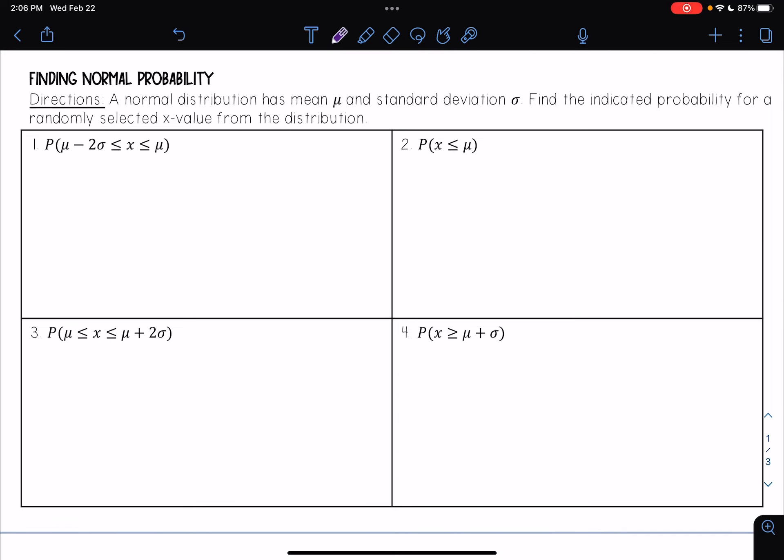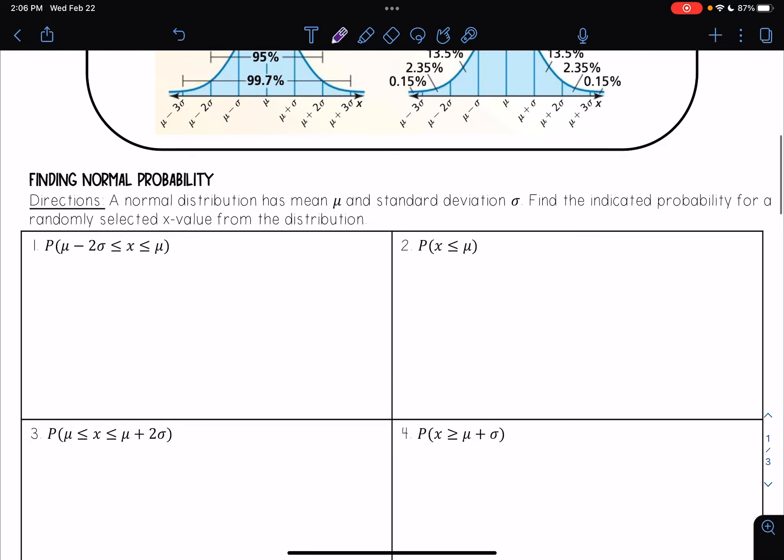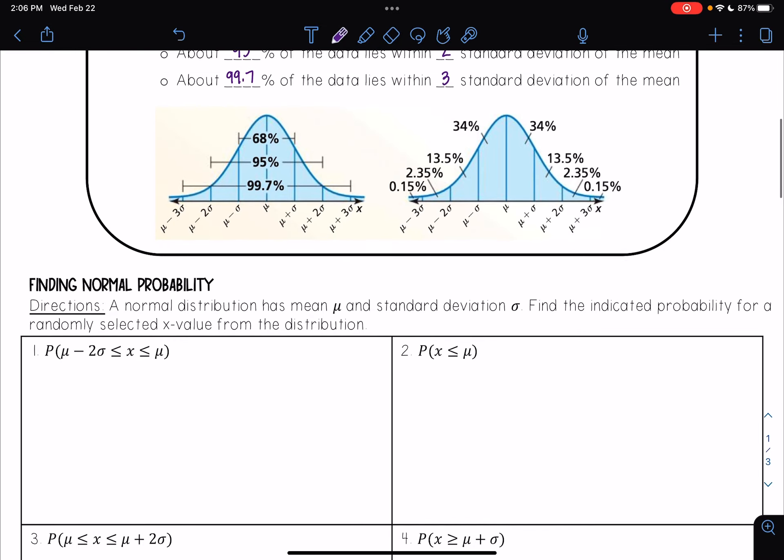So first, I want to find the probability that μ - 2σ is less than or equal to x, which is less than or equal to μ. So I'm looking to find what that probability is between those two values. So what I'm going to do is I'm going to go up onto this graphic here, and you're going to want to have this handy when you are doing your homework.